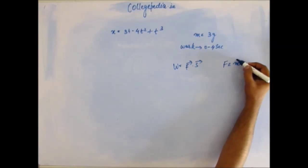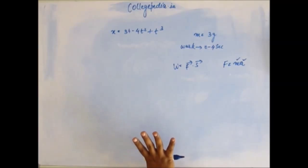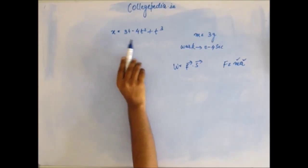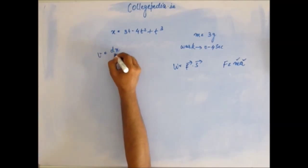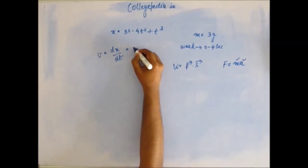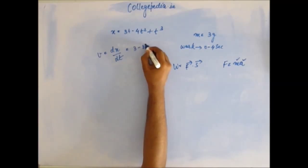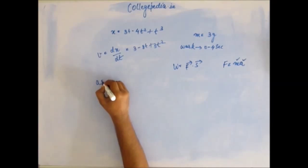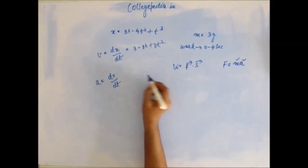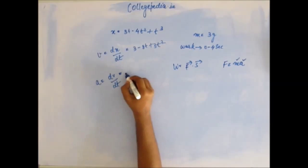I'm very sure you must have thought of it. Mass is given, acceleration you have to find. Finding acceleration is pretty simple because displacement as a function of time has been given. Velocity is dx by dt, that is 3 minus 8t plus 3t squared, and acceleration is dv by dt. So acceleration is 6t minus 8. You have the acceleration at any given time, you have the mass, so you have the force at any given time.